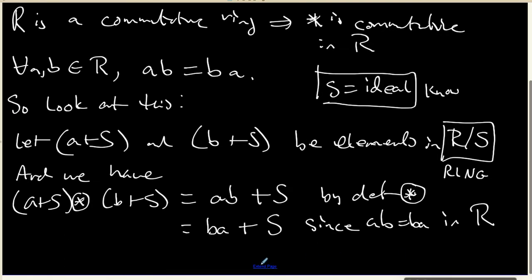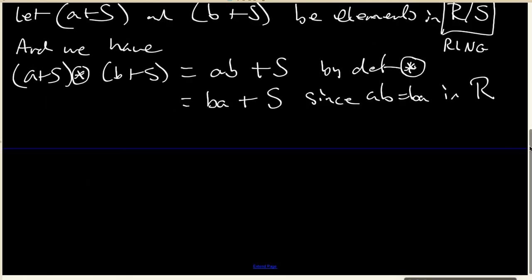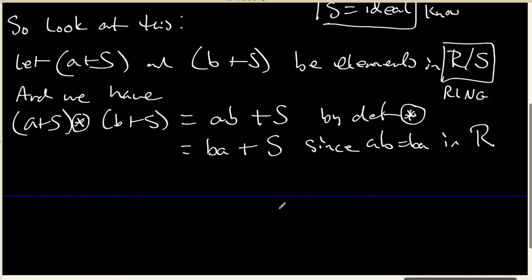This is where we use the commutative, the hypothesis that R is commutative. But now we can use the definition of coset multiplication again and rewrite this as B plus S coset times A plus S.